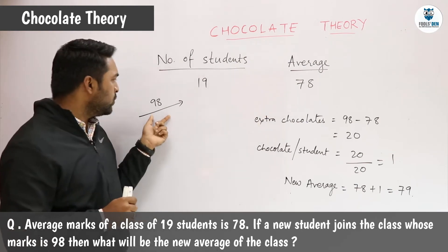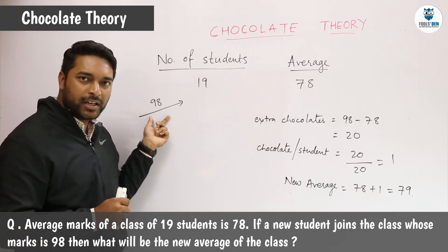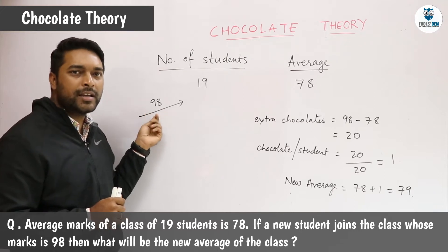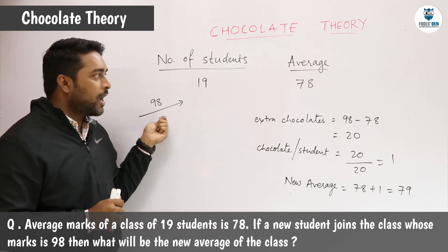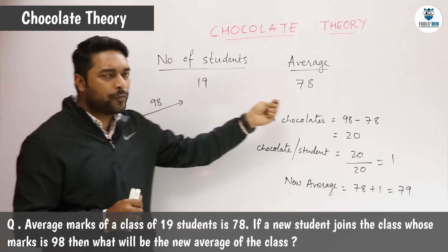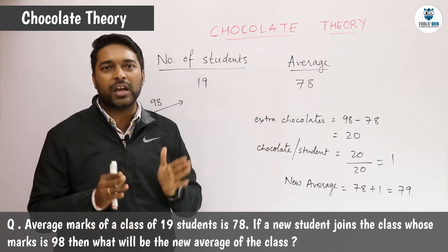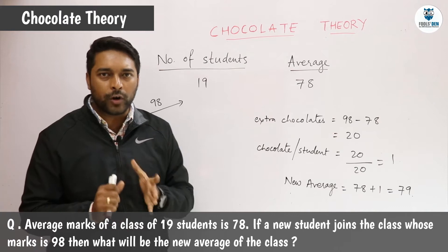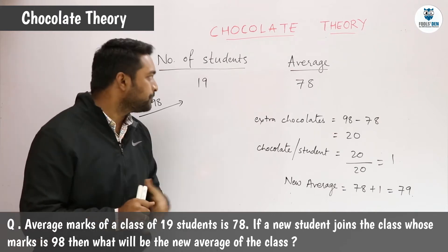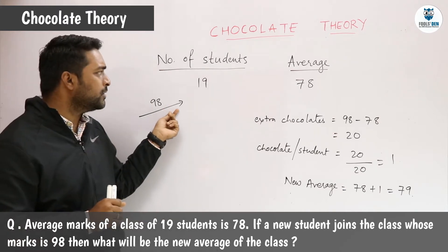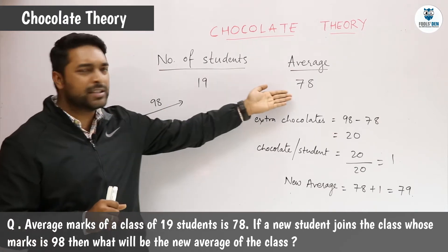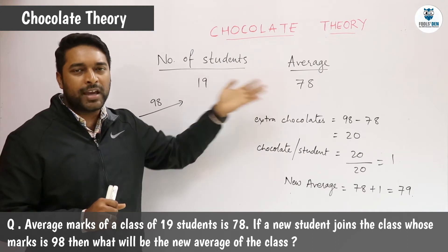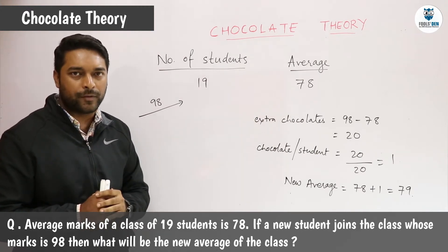Now a new student comes with 98 marks — that means we will consider that he has 98 chocolates. And again we have to find the average, which means we have to distribute the chocolates equally. So when the new student comes and he sees that the rest of the students have 78 chocolates with them, he will keep 78 chocolates with himself.